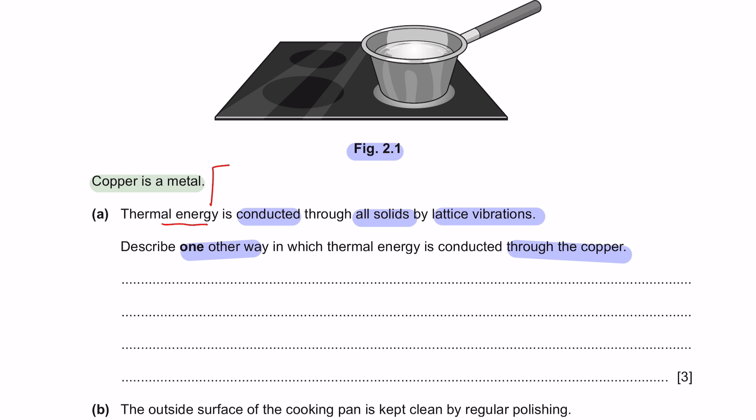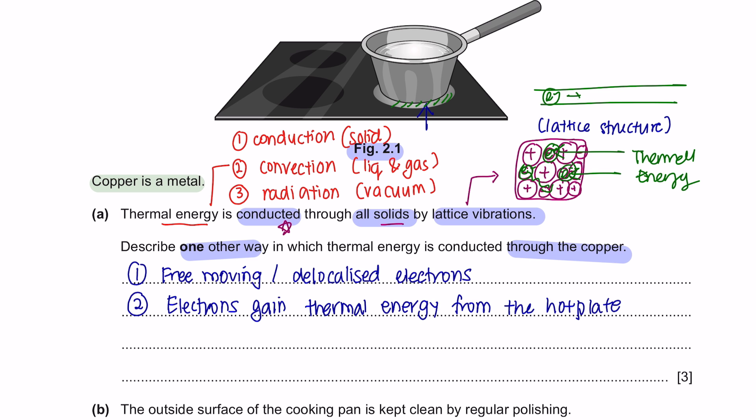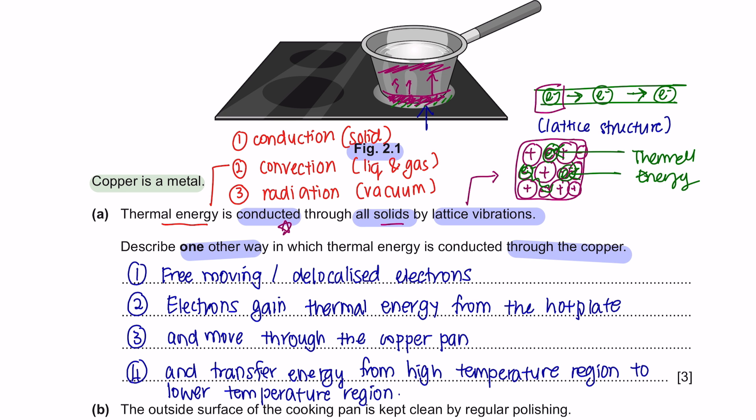Thermal energy can be transferred by three methods. The first one is conduction, which happens only throughout solid. Second is convection, which happens through liquid and gas. And lastly is radiation. We are looking at conduction over here which is transferred throughout solid. The atoms in a solid are in fixed position, which we call as lattice structure. In a lattice structure, there are free-moving electrons. When heat is being supplied, the electrons will gain thermal energy from the hot plate. Now, these electrons will move throughout the copper plate. Now, these electrons will transfer energy from a high-temperature region to a low-temperature region. So, this is how thermal energy is conducted throughout the whole solid by lattice vibration. And this is what you call as conduction.